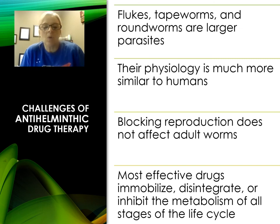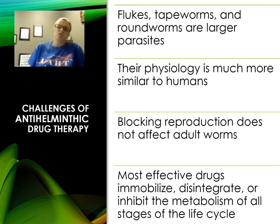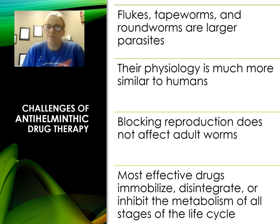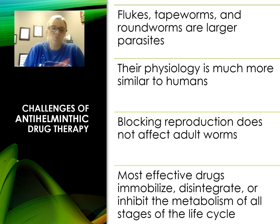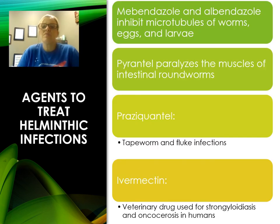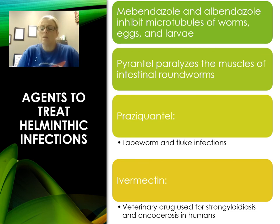Helminths pose particular challenges: they are much larger than other microorganisms and their physiology is too similar to ours. Blocking reproduction doesn't always affect adult worms, and it is very hard to immobilize or inhibit metabolism due to their complex life cycles with multiple stages. Common treatments include praziquantel for tapeworms and flukes, and ivermectin — primarily a veterinary drug — which can be used in humans but only under a doctor's supervision.